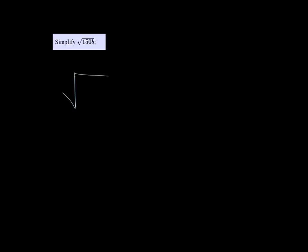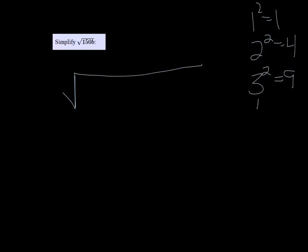We want to simplify the square root of 150b. Looking at the perfect squares: 1 squared equals 1, 2 squared equals 4, 3 squared equals 9, 4 squared equals 16, 5 squared equals 25.